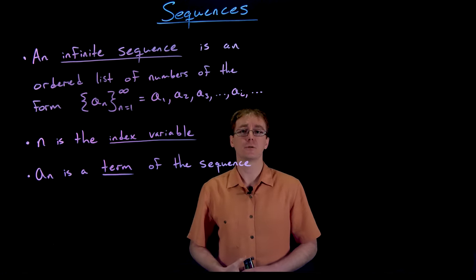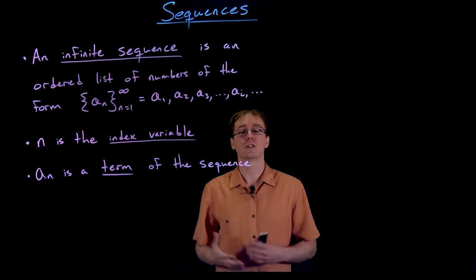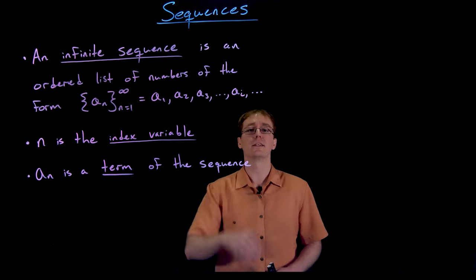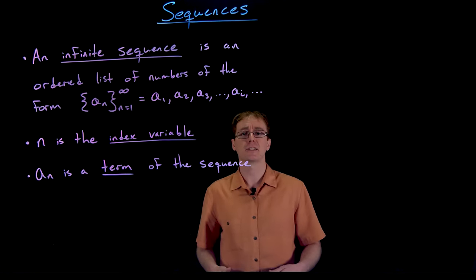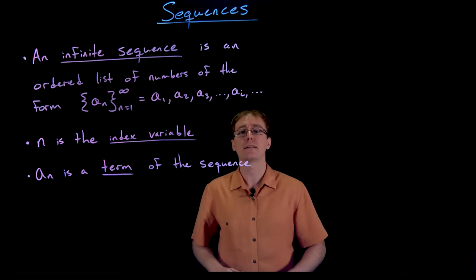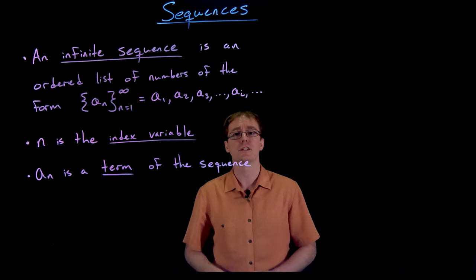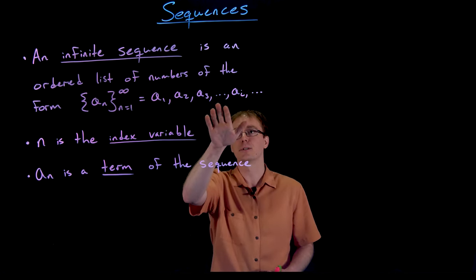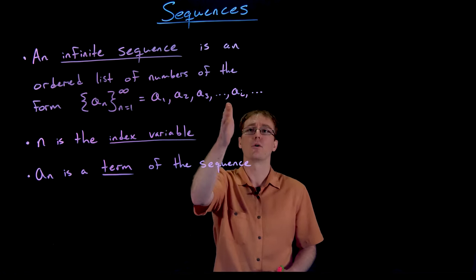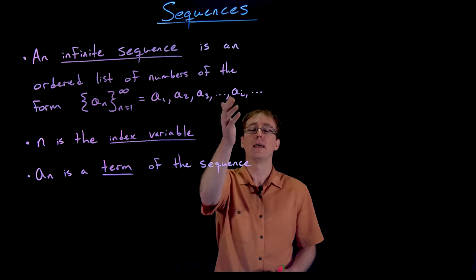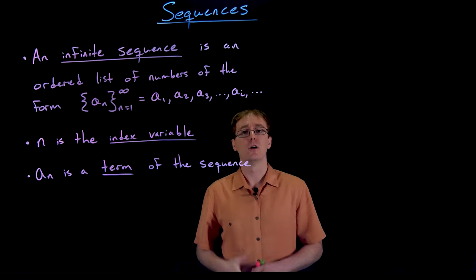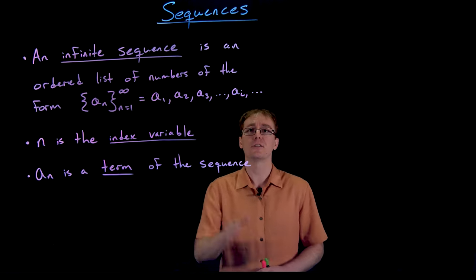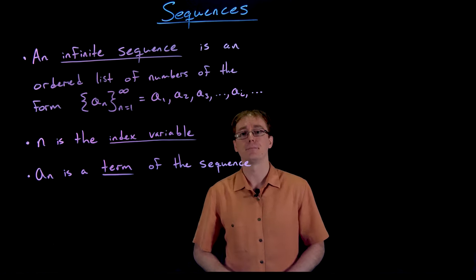Another common way sequences are expressed is using an ordered list, where we actually write the terms out like a1, a2, a3, a4, and so on. A sub i is just representing some random term in our sequence, and it just keeps on going forever.